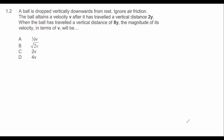So what we're going to do is look at Situation 1. Ball attains a velocity of v after it has traveled 2y. We know that it's traveled 2y, and we know that it starts from rest — it says 'starts from rest.'